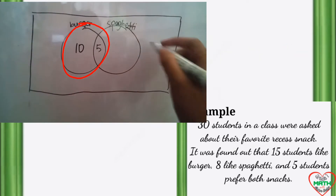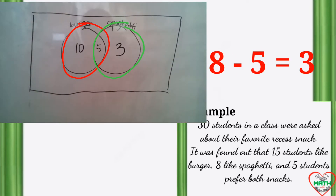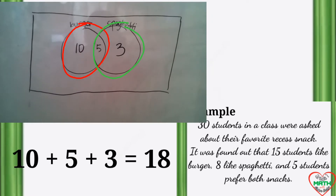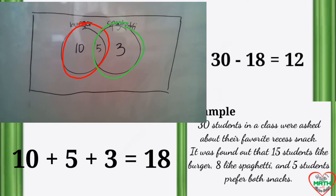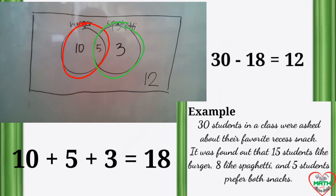On the other hand, we write 3 on the spaghetti side since there are 8 students who like spaghetti — we subtract 8 minus 5 since we already have 5 in the middle. As you can see, we have a total of 18. But in the given we asked 30 students, meaning the remaining 12 are the students who do not like either of the two snacks, so we write 12 outside the circles.